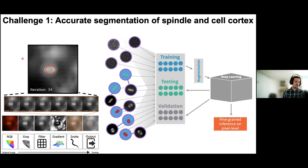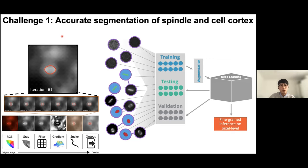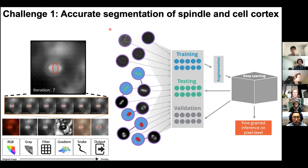For someone interested in implementing SpinX with a different microscope — for example a confocal — retraining would be available on Apeer but may not be necessary. We've already tested on different subcellular structures and were able to pick up the spindle, so I would recommend first testing it out on confocal images to see if predictions are correct without retraining.